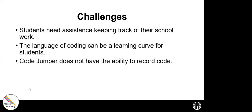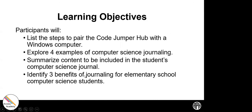Our learning objectives: we're going to list the steps to pair the Code Jumper hub with a Windows computer. We'll explore four examples of computer science journaling, summarize content to be included in a student's computer science journal, and identify three benefits of journaling for elementary school computer students. With that, let's turn this over to Joe to get us started.